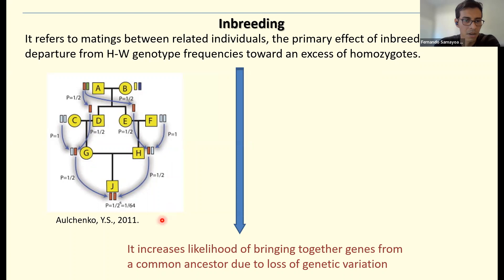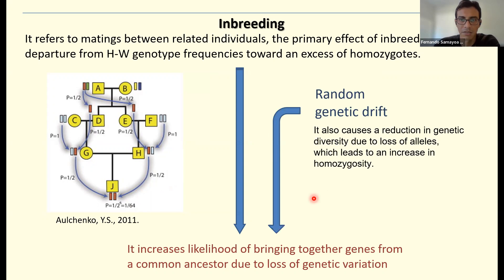I also want to mention that there is another force that creates a similar effect in a population by accumulating homozygotes, and that is random genetic drift. It also causes a reduction in genetic diversity due to the loss of alleles, which leads to increasing homozygosity as well.